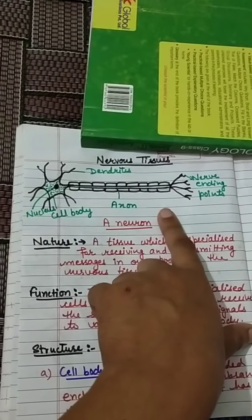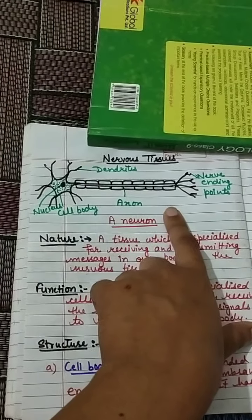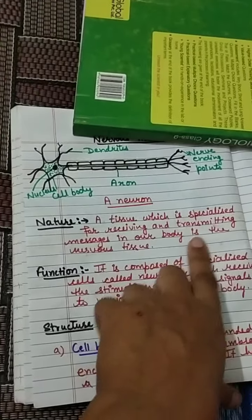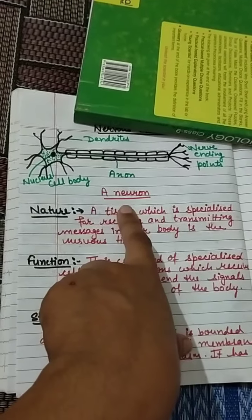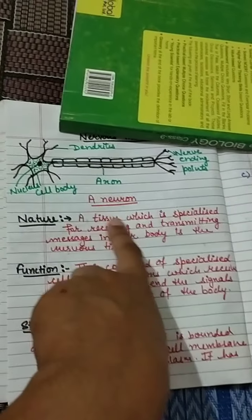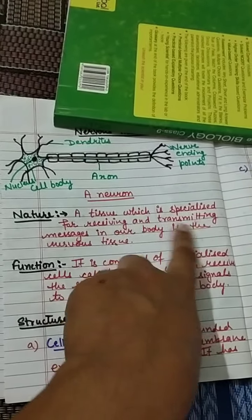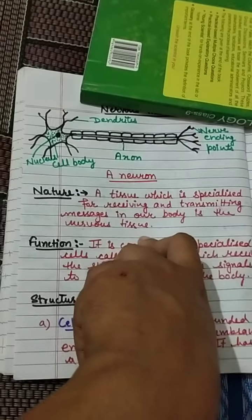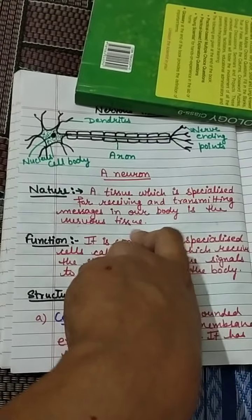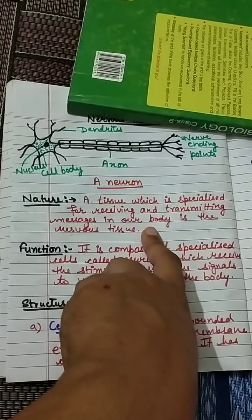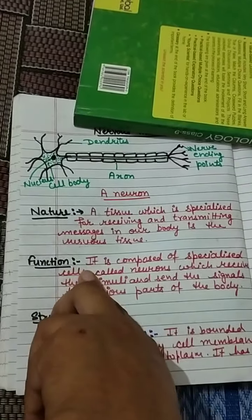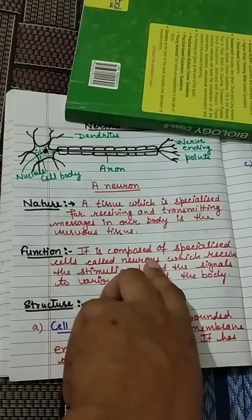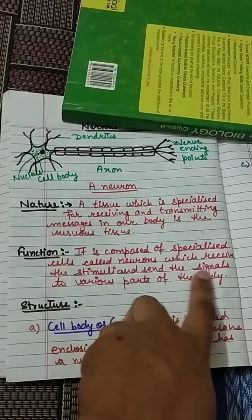Nervous tissues are present in the brain and help in receiving the stimulus and giving the response. A tissue which is specialized for receiving and transmitting messages in our body is known as nervous tissue. The basic unit is called a neuron.